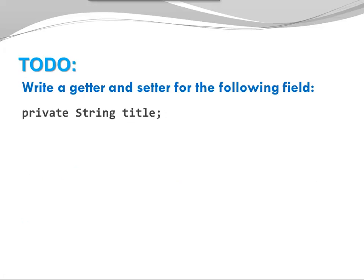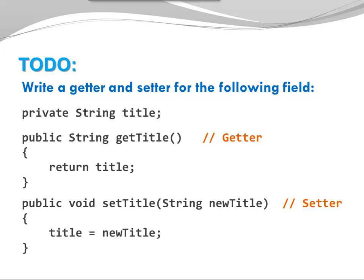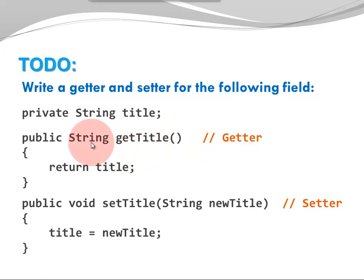Now it is your turn. Write a getter and a setter based on the following field: 'private String title'. Here is the solution. You can see the private field and the corresponding getter. Notice the name of my getter — it's called 'getTitle'. So we have the prefix 'get', no parameter, because there's no additional information necessary to return a field value. My return type has to match the type of my field and I'm returning the field directly.